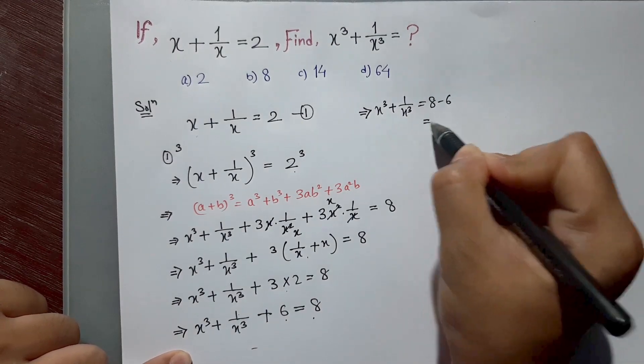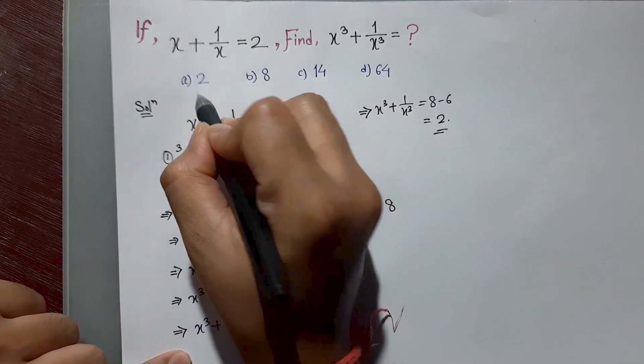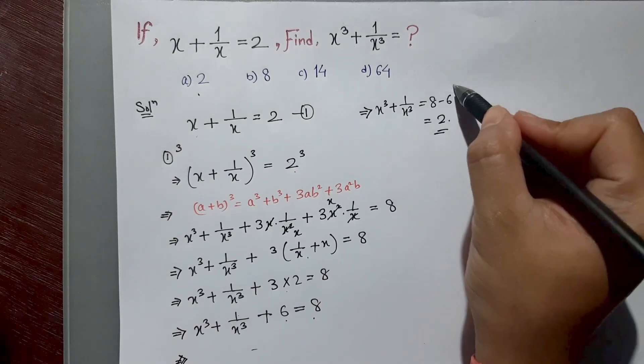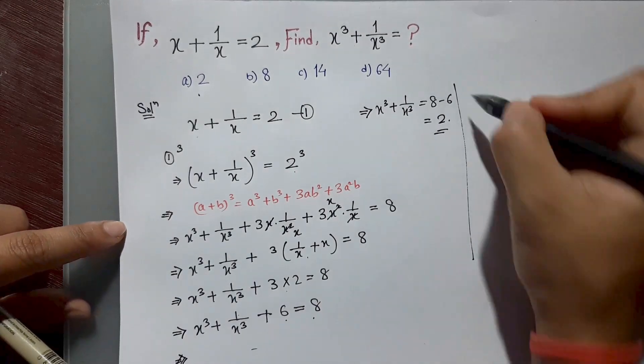x cube plus 1 by x cube is equal to 8 minus 6. The answer will be 2. We can solve this with a shortcut also which we can apply in computer exams.